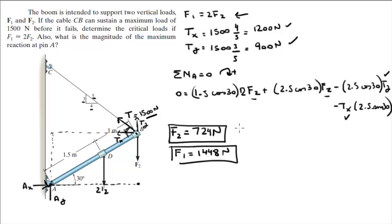Now, keeping that in mind, the rest of the problem becomes cake, because sum of the forces in the X equals 0. In the X, we have minus TX plus AX equals 0. So AX equals TX, which equals 1200 newtons.